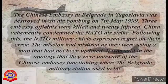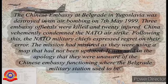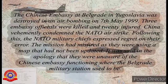The Chinese Embassy at Belgrade in Yugoslavia was destroyed in an air bombing on 7th May 1999. Three embassy officials were killed and 20 injured. China vehemently condemned the NATO airstrike, following which the NATO military chiefs expressed regret on their error.